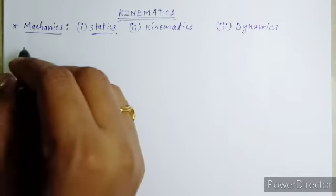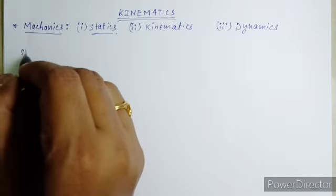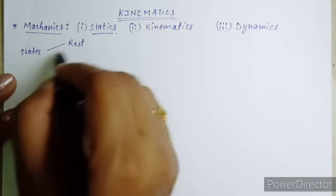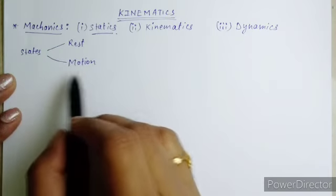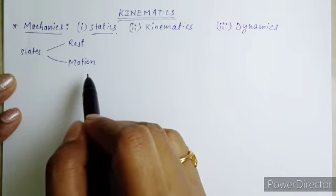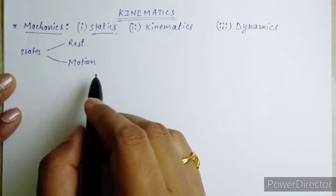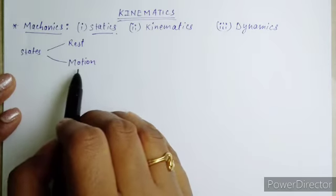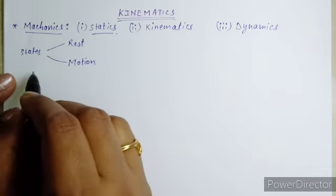Let us have some more basic topics. There are two states of an object: one is rest and another one is motion. For the details of rest and motion, you can see the video of Class 9th Physics where you will get some basics. If you have forgotten it, review that; if you know it, you can continue this video.